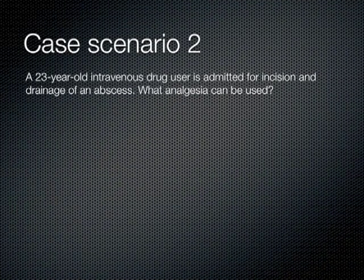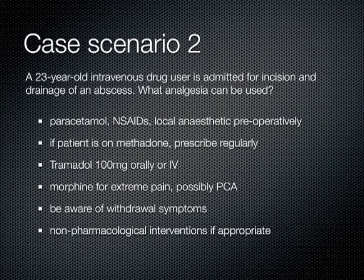Case scenario two: a 23-year-old intravenous drug user admitted for incision and drainage of an abscess. Prescribe paracetamol and non-steroidal anti-inflammatory drugs preoperatively. Local anesthetics may also be an option before surgery. If the patient is on methadone — a treatment for heroin addiction — this may be prescribed regularly; confirm the dose with the patient's GP if necessary. Tramadol at 100 mg orally is a good first option. Morphine can be given for extreme pain orally or intravenously, and a PCA may be appropriate. Be aware of possible withdrawal symptoms. Non-pharmacological interventions like transcutaneous electrical nerve stimulation or acupuncture may also be appropriate.